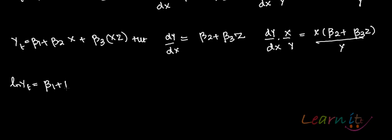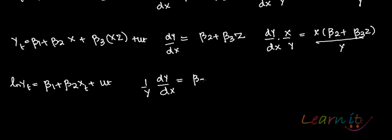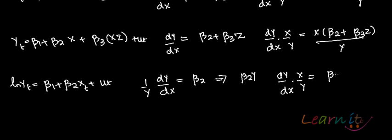In the case of the log-lin model, you have log(yt) = β1 + β2*xt + ut, and you want to find out dy/dx. Differentiating gives (1/y)*(dy/dx) = β2, which implies dy/dx = β2*y. And elasticity, (dy/dx)*(x/y), equals β2*y*(x/y), which is β2*x.